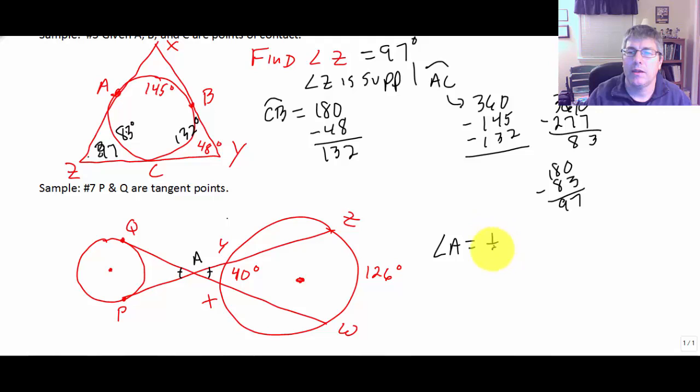Well, angle A will equal, from our previous knowledge, one half of 126 minus 40. So angle A is equal to one half of 86. So angle A is 43. So our two tangent angle here is 43. And 180 minus 43 will get 137 degrees.